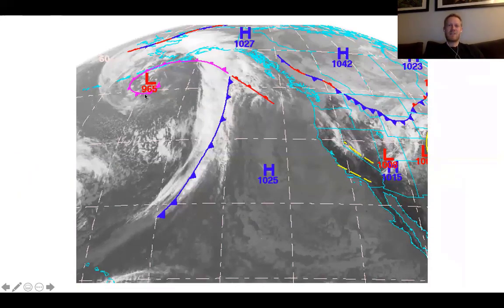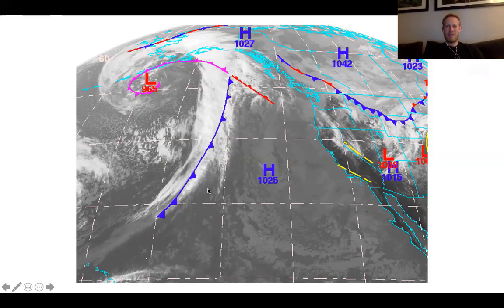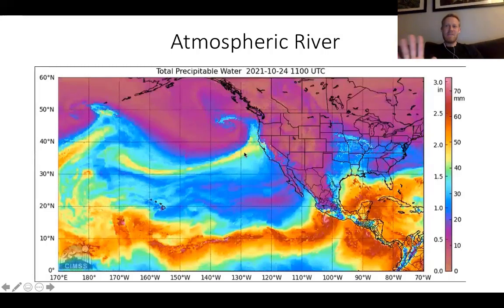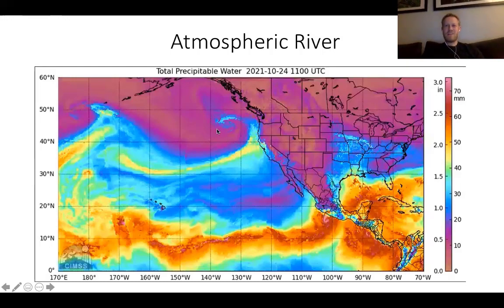Here's what it looks like on satellite: the low pressure center swirling away, usually with a big occluded front, cold front, and warm front. If there was an atmospheric river, it would be along here ahead of the cold front in the warm sector. Here's another example — here's the low pressure, the occluded front, warm front, cold front, and an atmospheric river pulling moisture in. The atmospheric river is connected to that warm conveyor belt, and as we approach the warm front, that air gets lifted up and wrapped into the low pressure center itself.